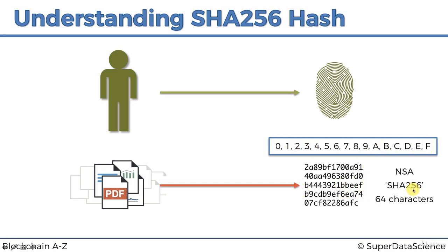There are a total of 16 possible characters, so each character in the resulting hash takes up four bits, because 2 to the power of 4 is 16, and 4 times 64 is 256 — that's how these numbers are all linked together. The important thing to note is that this algorithm works not just for text documents; it works for any digital content. You could put a video, text, audio, an executable file, or even a whole operating system into the algorithm and it will spit out a SHA-256 fingerprint.